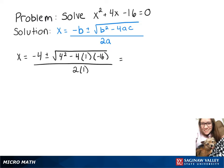After we simplify what's under the square root, we'll get negative 4 plus or minus the square root of 80 over 2.